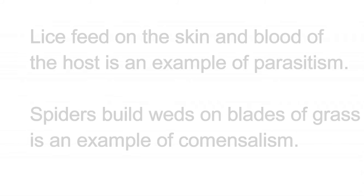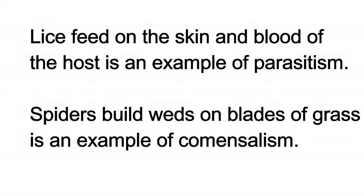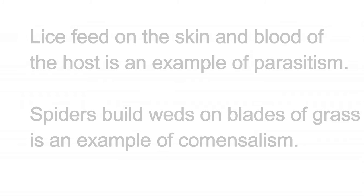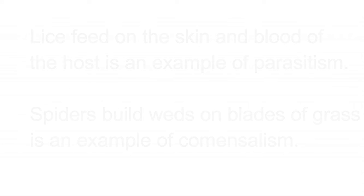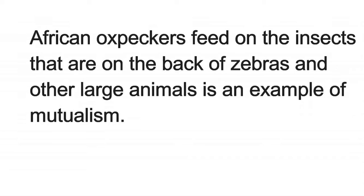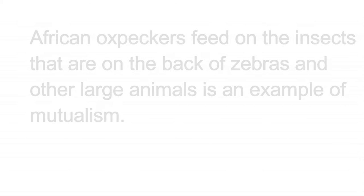Lice spreading on the skin and blood of the host is an example of parasitism. A spider building webs on blades of grass is an example of commensalism. African oxpeckers feeding on the insects on the back of zebras and other large animals is an example of mutualism.